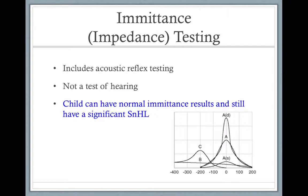Children can have normal admittance tests and still have significant hearing loss. The tympanogram is a picture of admittance — the ease of energy flow — as a function of pressure change in the ear canal. A probe is put in the child's ear, and it feels a bit like going on an airplane where air is pushed in and then sucked out. Measurements of admittance are made as the air is put in and then taken out.